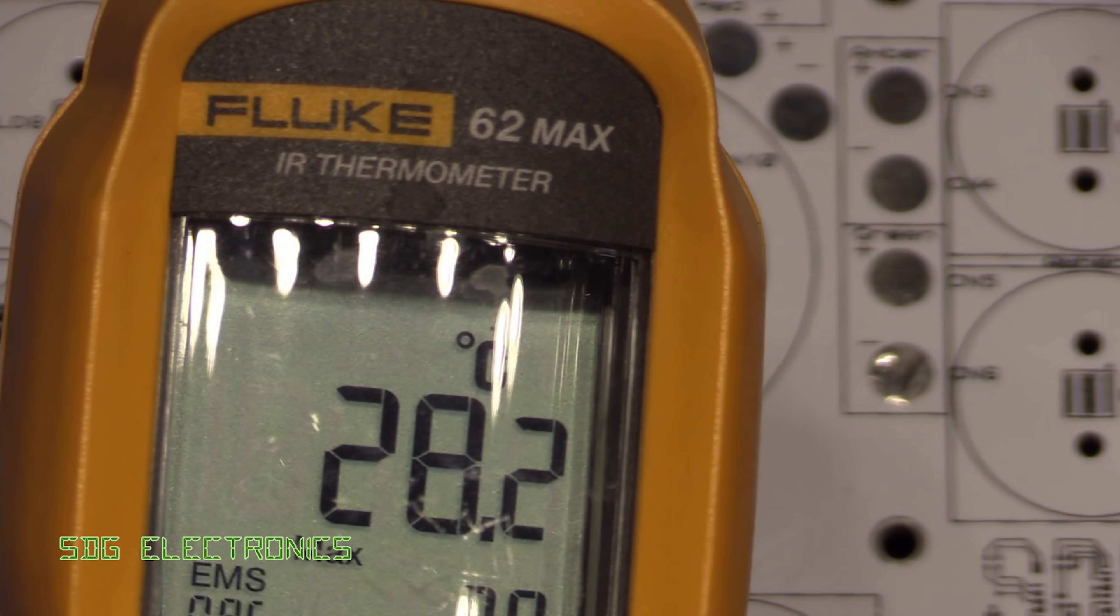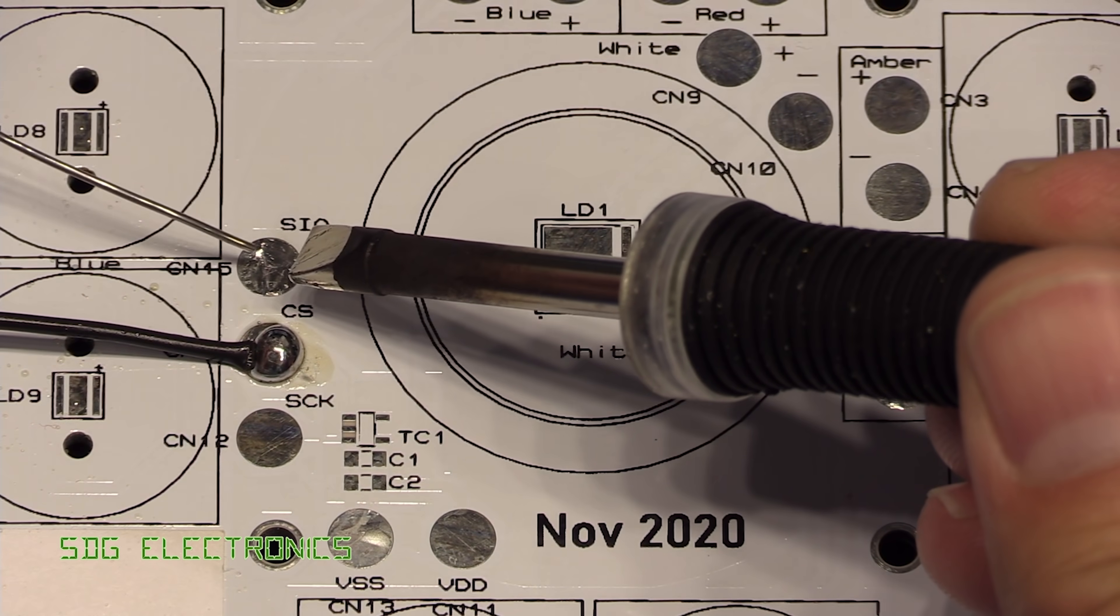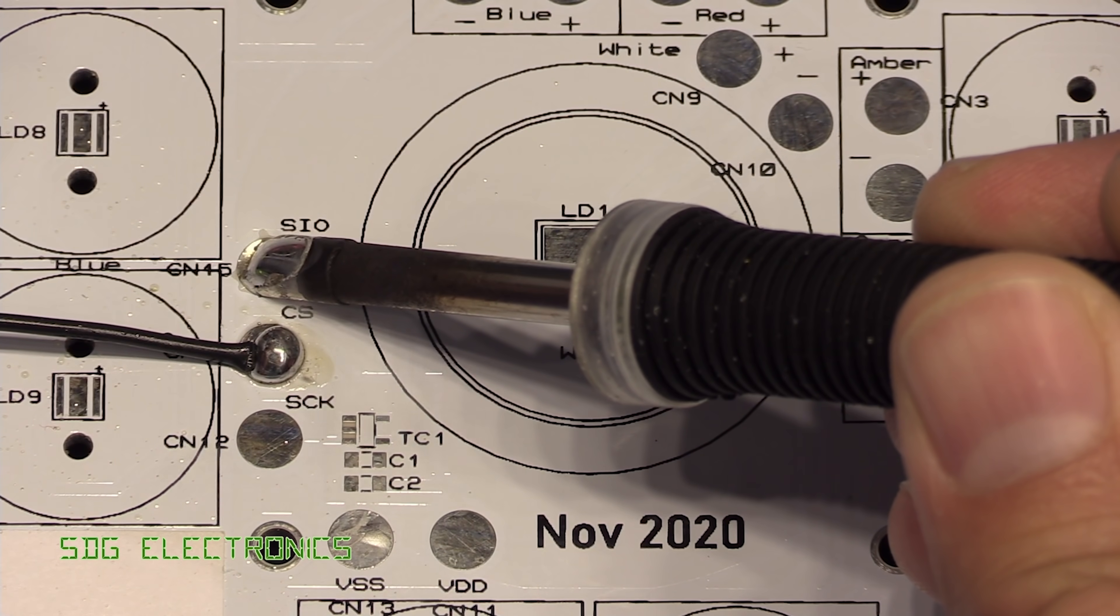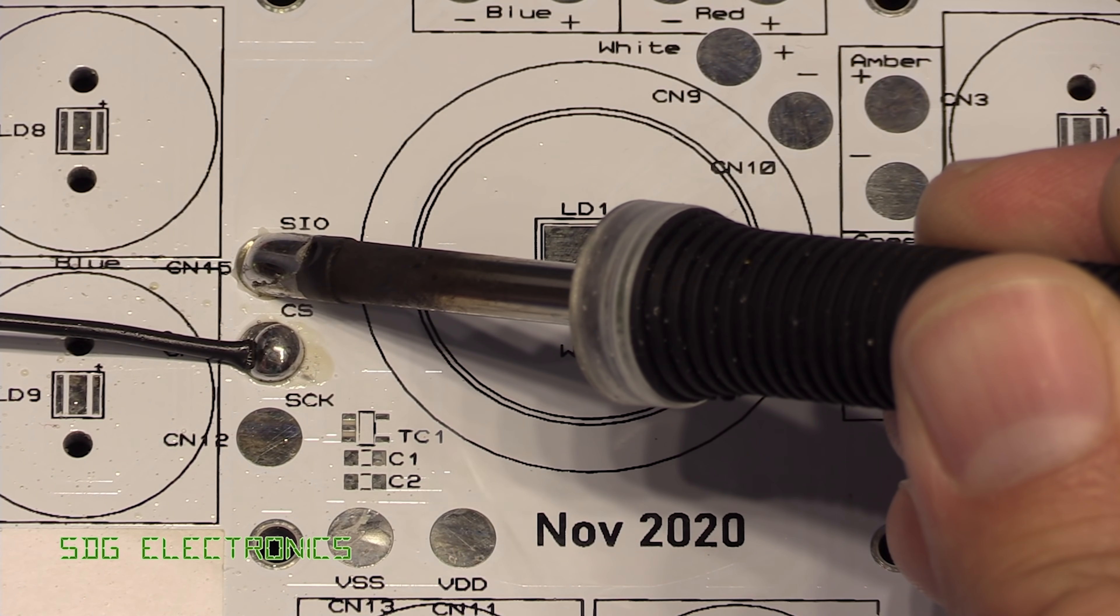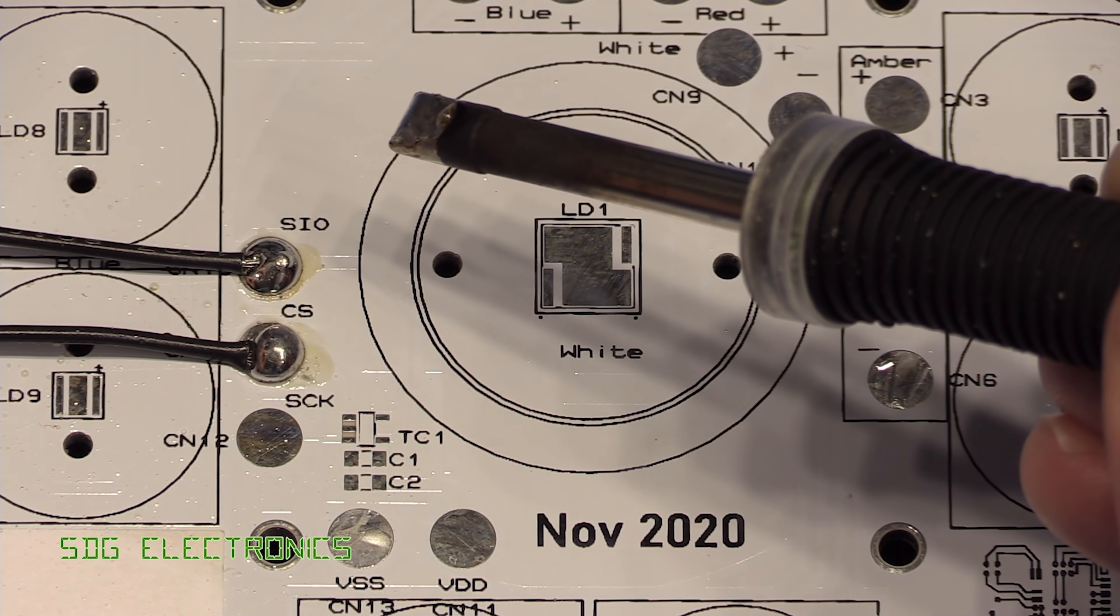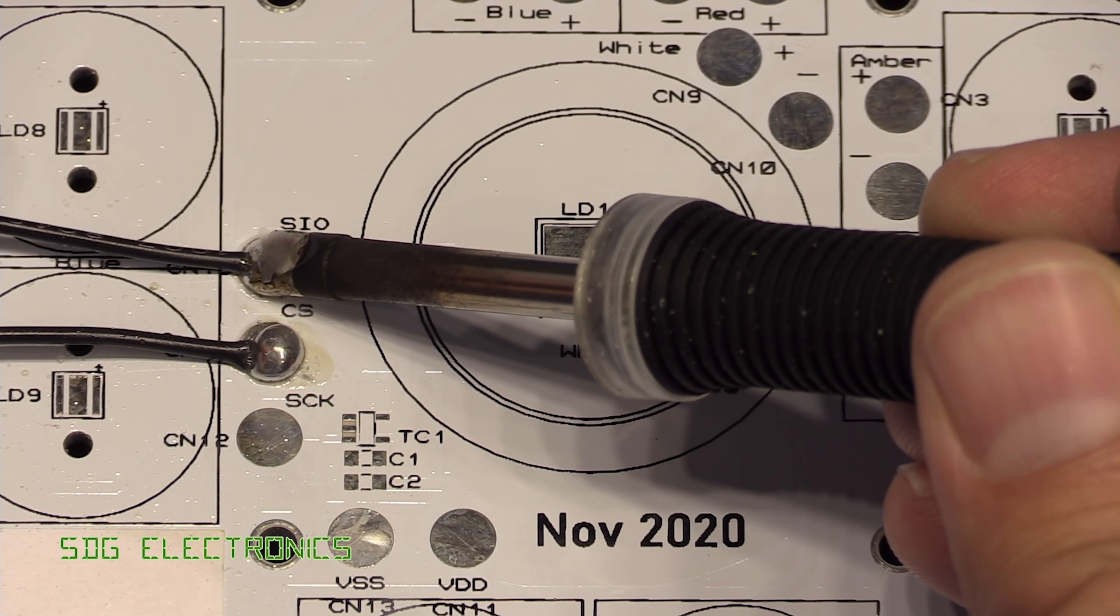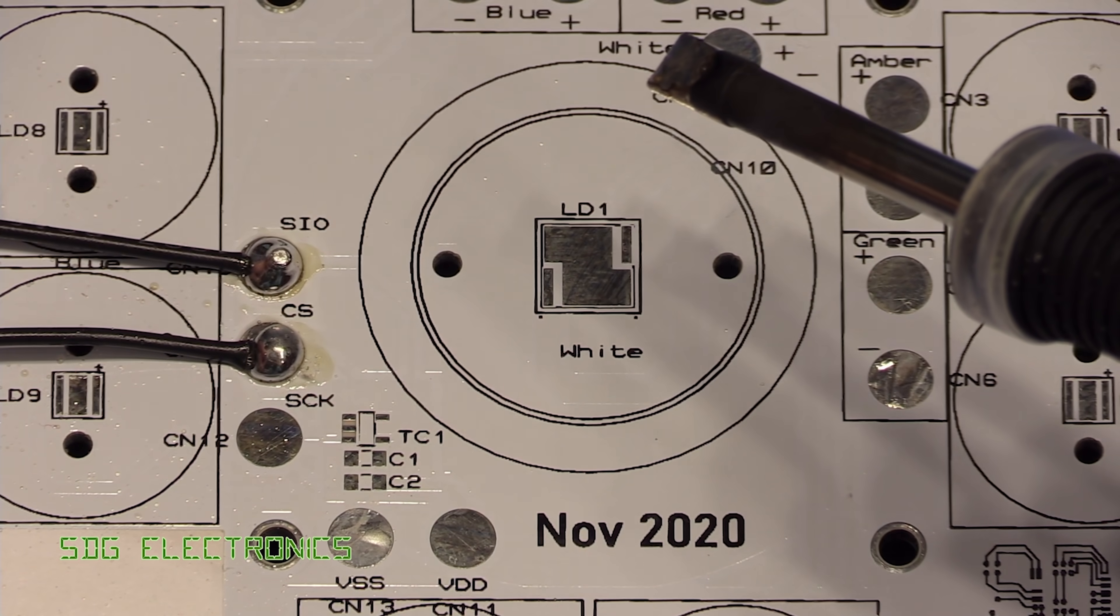So I've cooled the PCB back down to about 28.2 degrees C as you can see there. Let's try with the standard Metcalf cartridge. As you can see, the solder isn't getting stuck on this one. And then we'll try and solder that wire in. Not really too much of a problem there, probably could have done with a little bit more solder. But yeah, that solder is absolutely no problem.